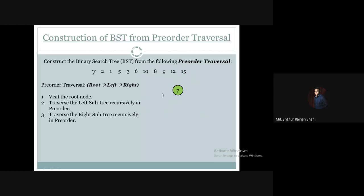So if the element is pre-order traversed, the first value is 7. Then obviously the elements less than 7 go to the left subtree, and the elements greater than 7 go to the right subtree.